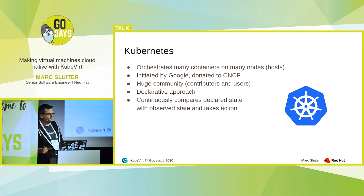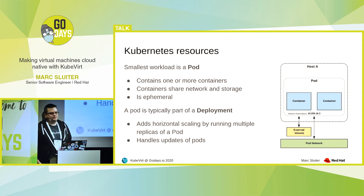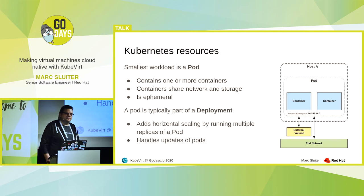How do you declare your expected state on the cluster? The smallest workload you have is a pod. A pod can run one or more containers. These containers are sharing network and storage. And it's very important that these pods are ephemeral — they can be restarted at any time, even on another node. That might happen because of node failures or other reasons. Typically, these pods are part of a deployment. The deployment adds horizontal scaling features to pods, so we can run multiple pods of the same kind. And it can handle updates of your pods if you want to change some properties or switch to a new version.